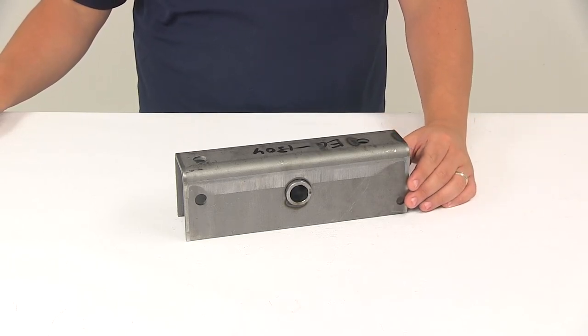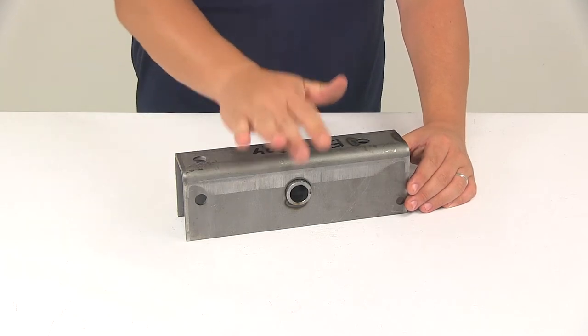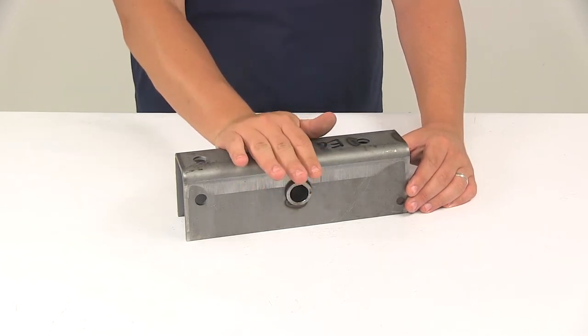Today we're going to be taking a look at the equalizer for two inch wide slipper springs. This is going to connect the slipper springs on a dual axle or triple axle trailer.